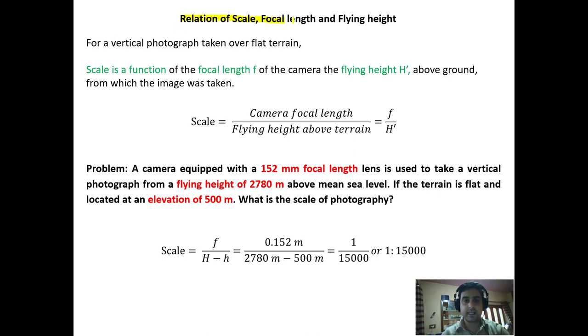Now there's a relationship between scale, focal length, and flying height. For a vertical photograph taken over flat terrain, scale is a function that varies with focal length f and flying height.